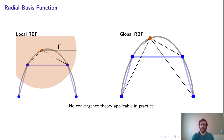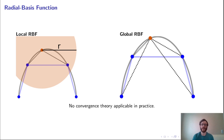For radial basis function mapping, the value on the output mesh is a function of all vertices on the input mesh. This can be quite expensive for a very large input mesh, so we can apply local RBFs, where we only consider vertices that lie within a radius r of the output mesh vertex. We can see a circle around the output vertex, and it only considers vertices on the input mesh that lie within that sphere.